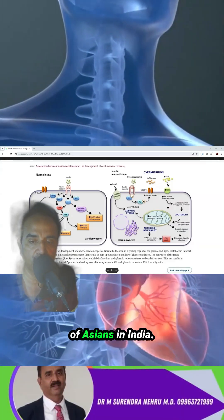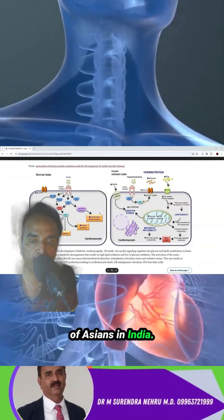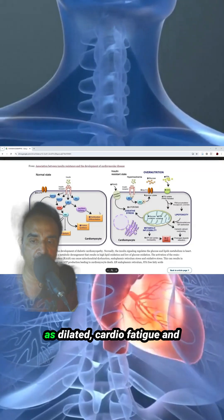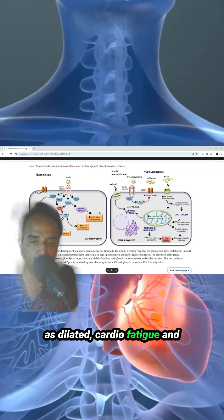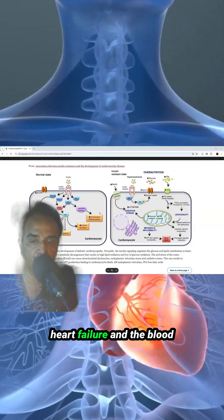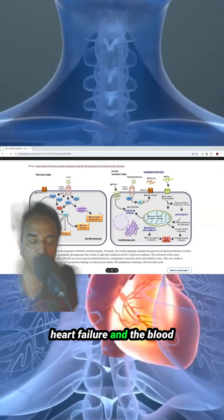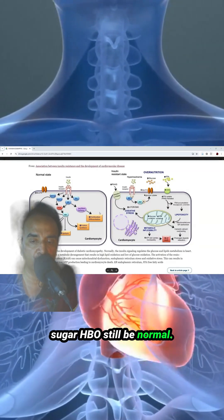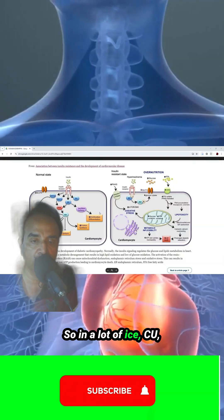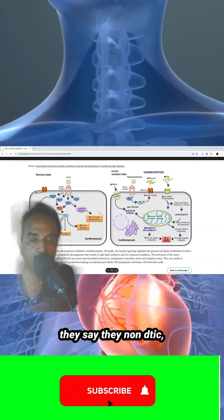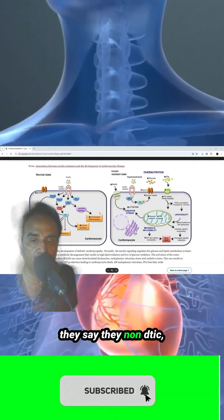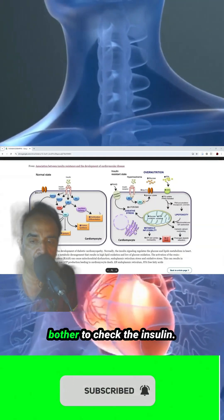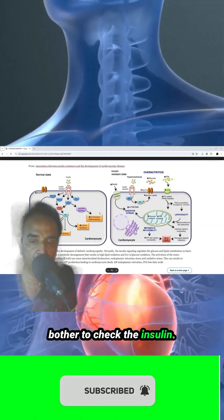We see many patients in India presenting for the first time with dilated cardiomyopathy and heart failure, yet their blood sugar and HbA1c are normal. In many CCUs, these patients are labeled as non-diabetic and no one bothers to check insulin levels.